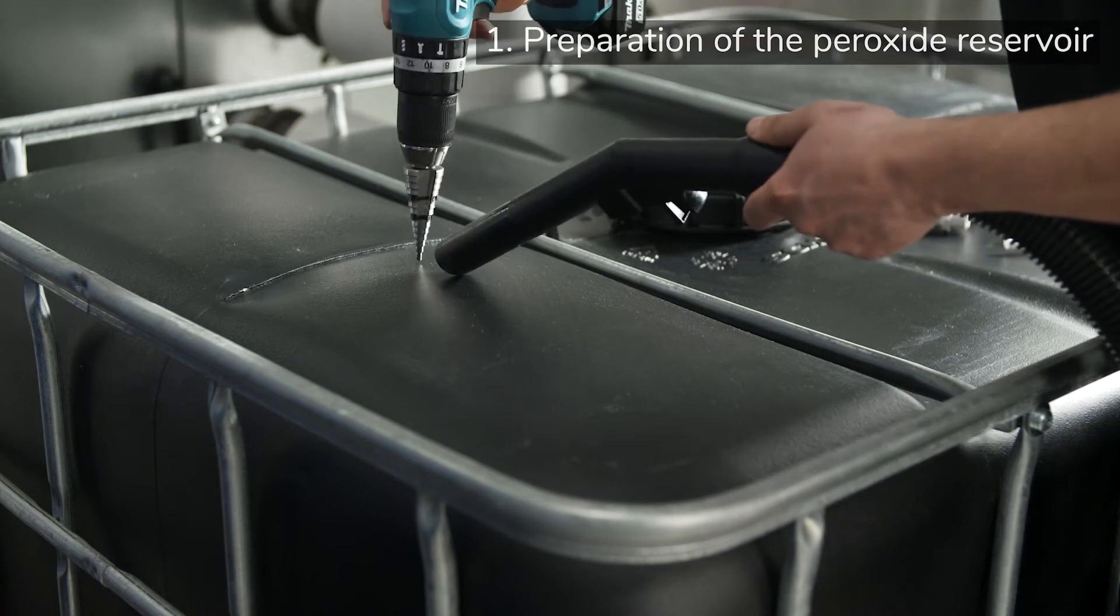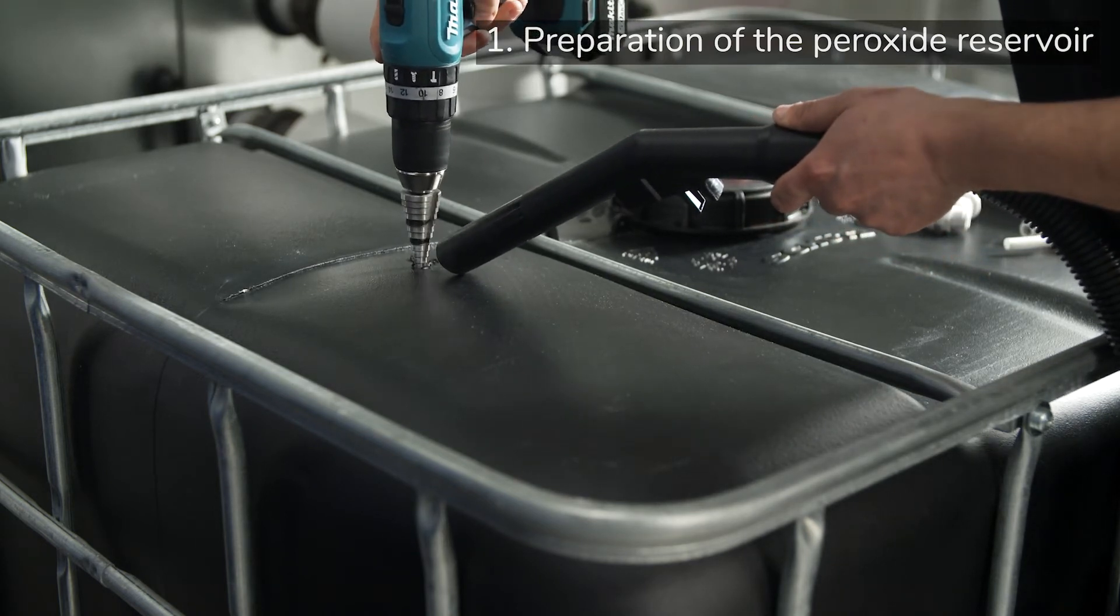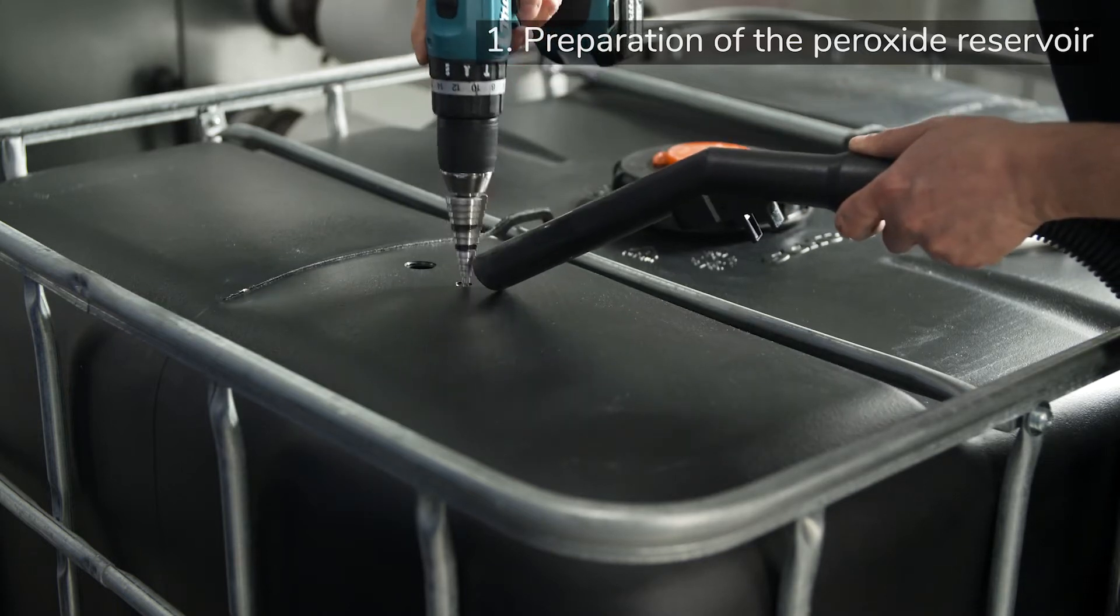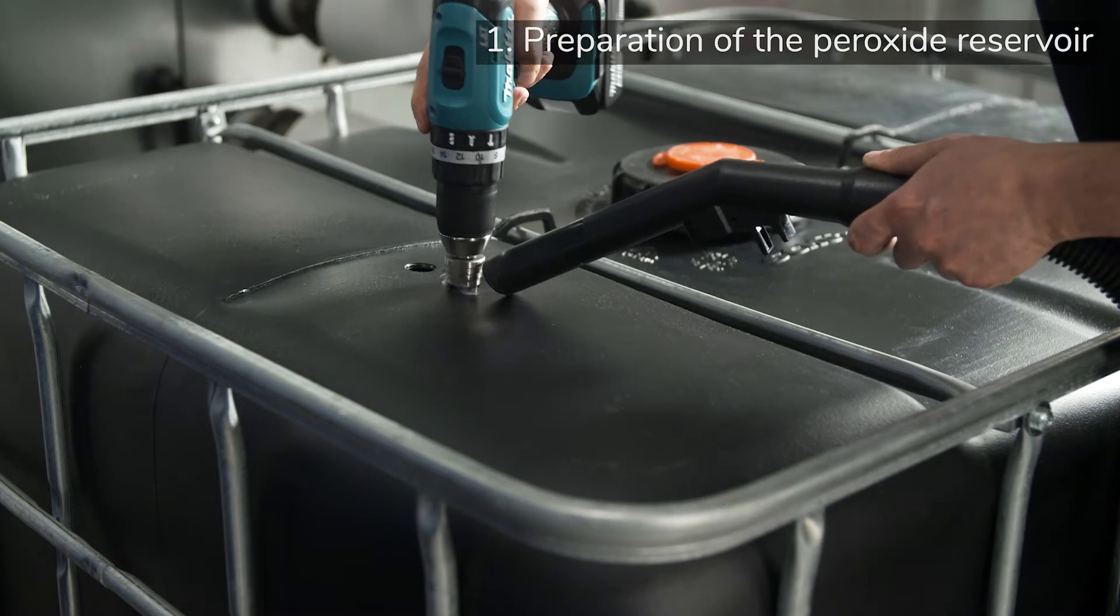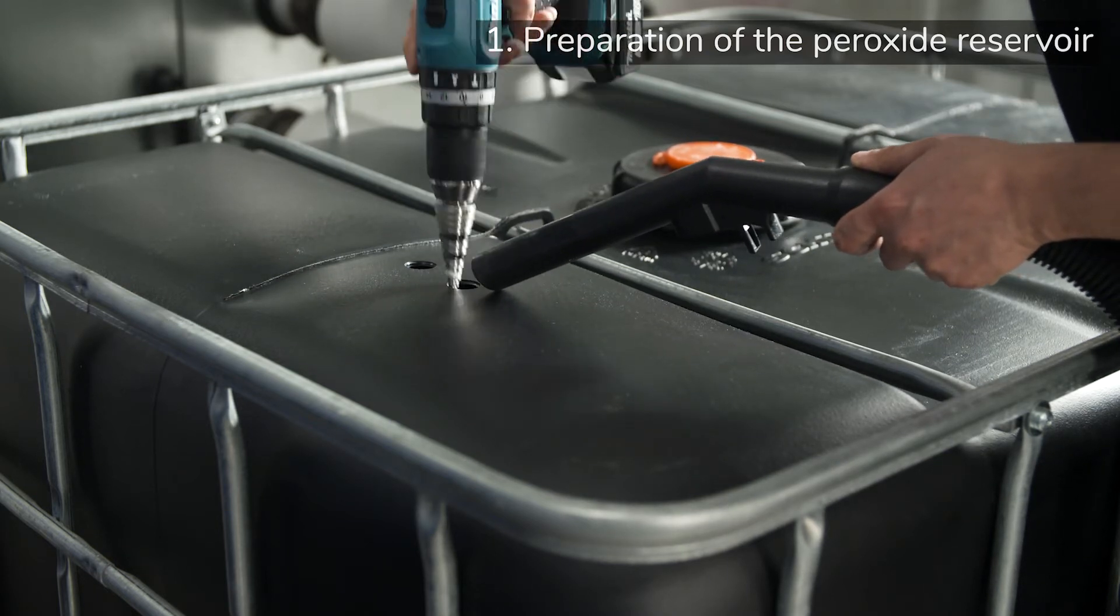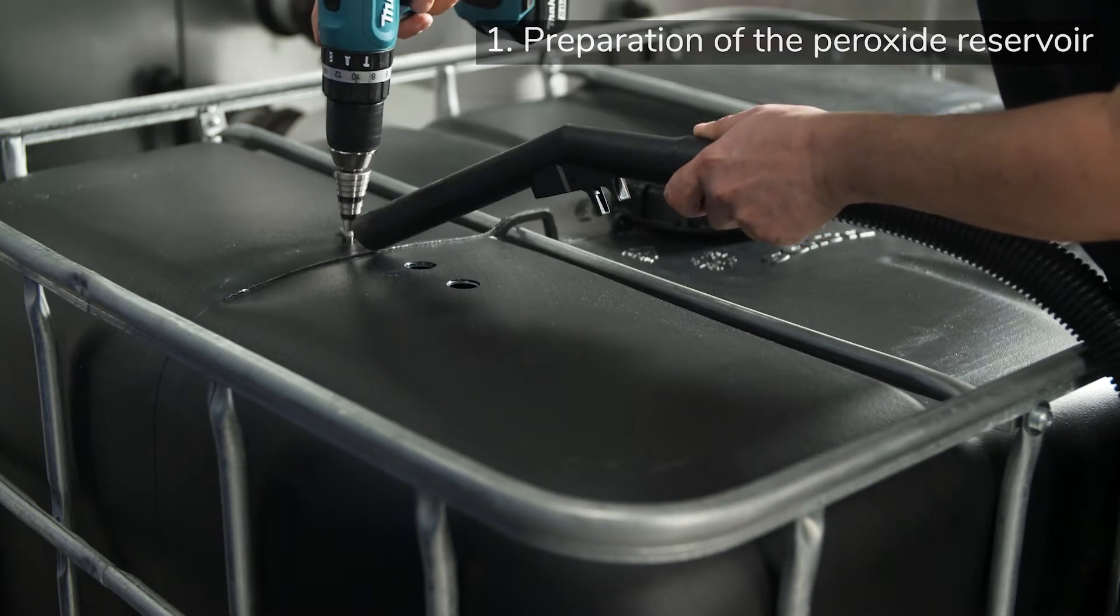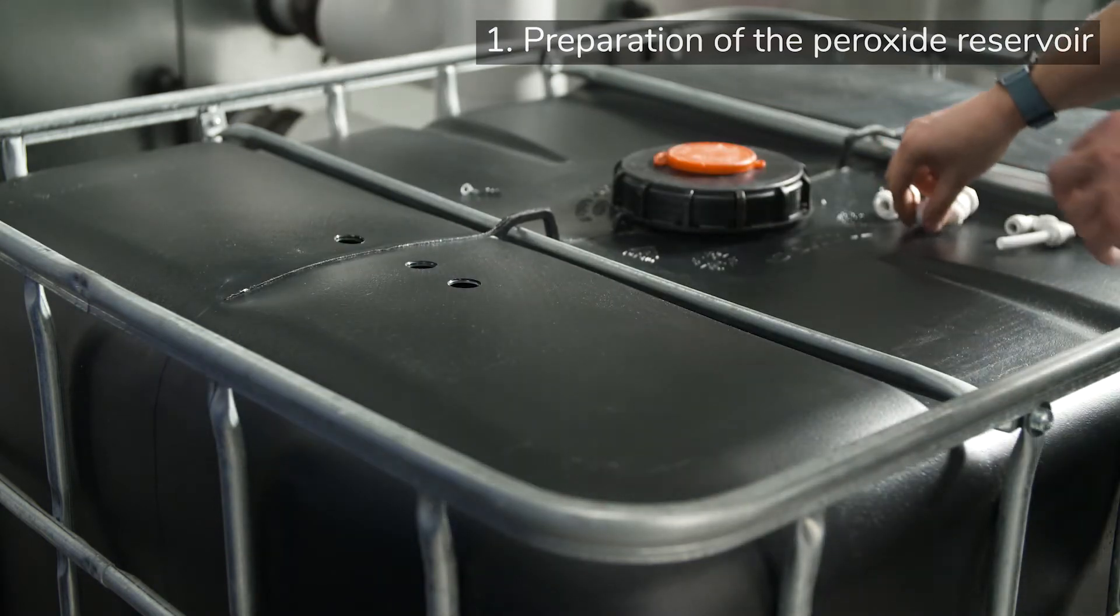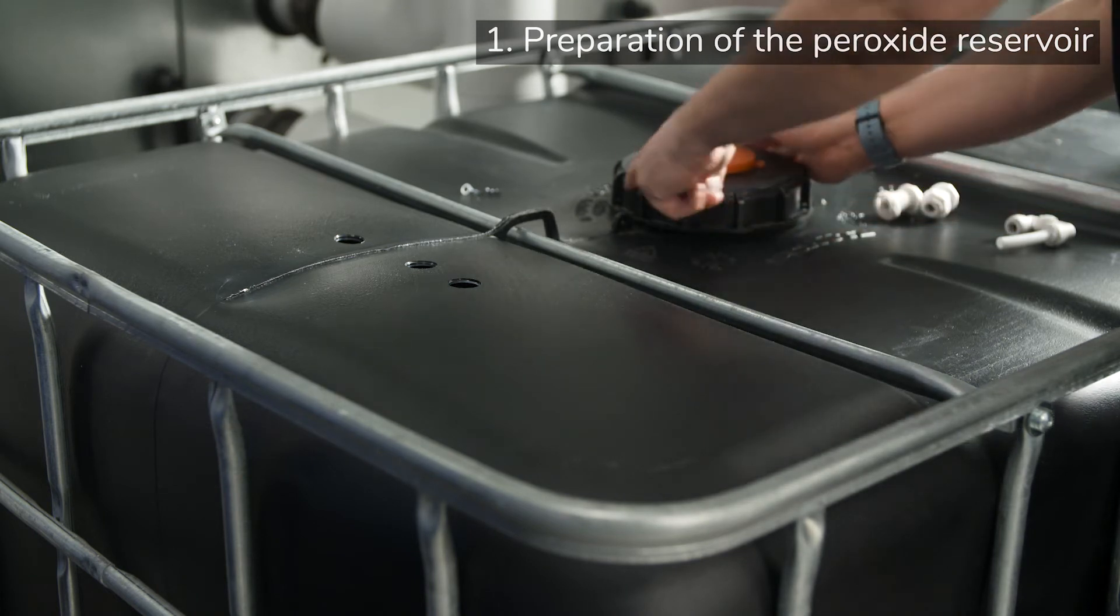Step 1. Drill three holes with diameter 22mm in the top part of the reservoir. It is important not to get residual plastic into the reservoir since it can clog the dosing pump later on. Here, we use a vacuum cleaner to remove the residue while drilling. One hole is for ventilation and the two others are for connecting tubing to the HP Gen cabinet.